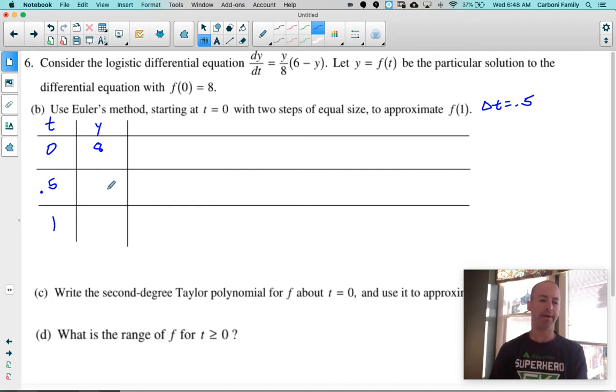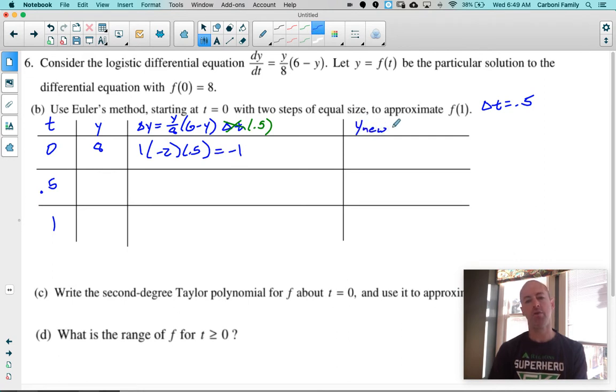And so my Delta T is 0.5. And so what I need to know now is what is my Delta Y? How much do my Y's increase? And I get my Delta Y by moving my DT in the differential equation to the other side. And so D Y represents your change in Y is Y over 8 times 6 minus Y times your DT. But we know that DT is 0.5. And then I like to put another column in my table. I'll fill that column in in a minute. So I'm going to go ahead and find my first Delta Y and that's going to be when I plug in eight for Y. So eight divided by eight is one. Six minus eight is negative two times 0.5. And that'd be negative one. And so what I like to do now is I like to say that my new Y coordinate is my old Y coordinate plus my newly found Delta Y. So eight plus my negative one gives me a new Y of seven.